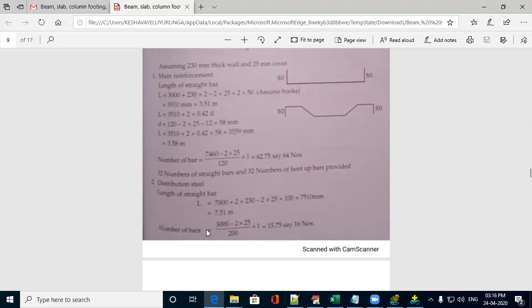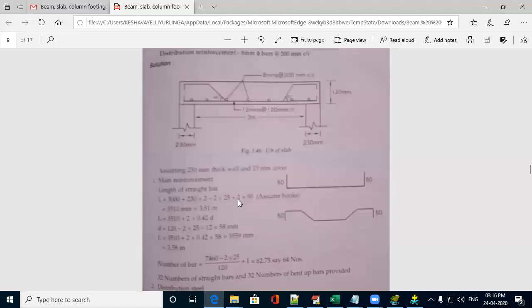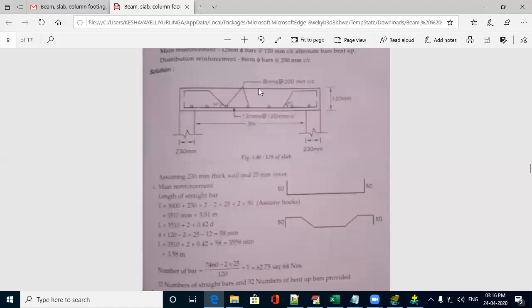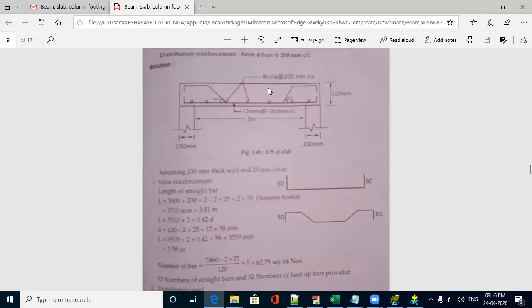these bars will be along the shorter direction. So, you have to calculate the number of bars. You have to take 3000 minus 2 times the cover divided by 200. That is the spacing. You can observe here, distribution bars at a distance of 200mm center to center